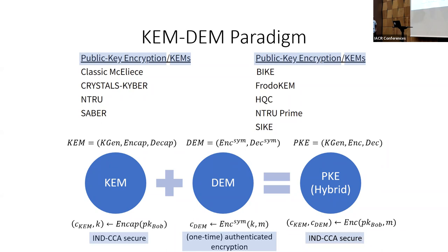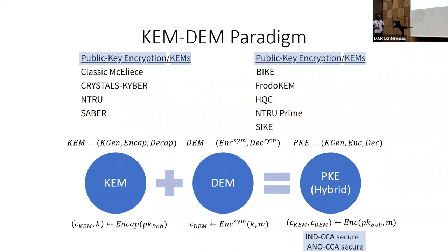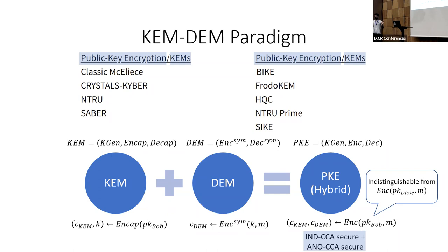It is well known that if you have an IND-CCA secure KEM, you compose it with an authenticated encryption scheme, and then you get an IND-CCA secure PKE scheme, thanks to Cramer and Shoup. But now, what if in addition to IND-CCA security, I want my hybrid PKE scheme to also satisfy anonymity? This talk will focus only on anonymity and not robustness due to time restrictions. Roughly speaking, by anonymity I mean that the encryption of a message m under Bob's public key should be indistinguishable from the encryption of the same message under a different public key, say Dave's.